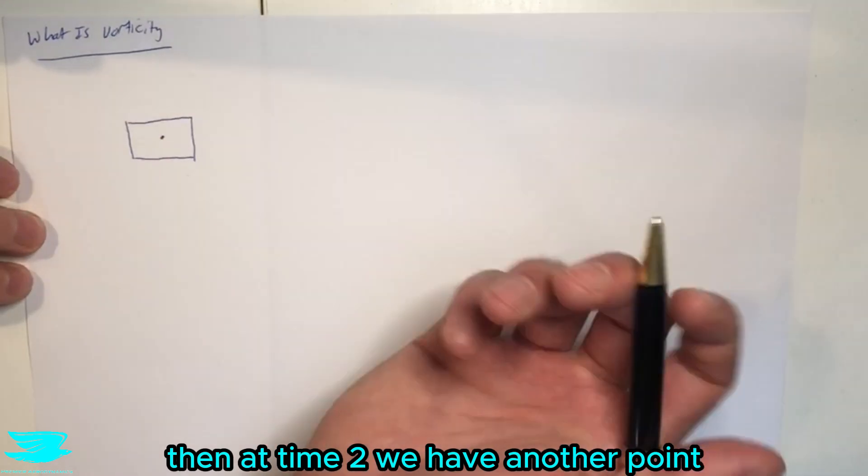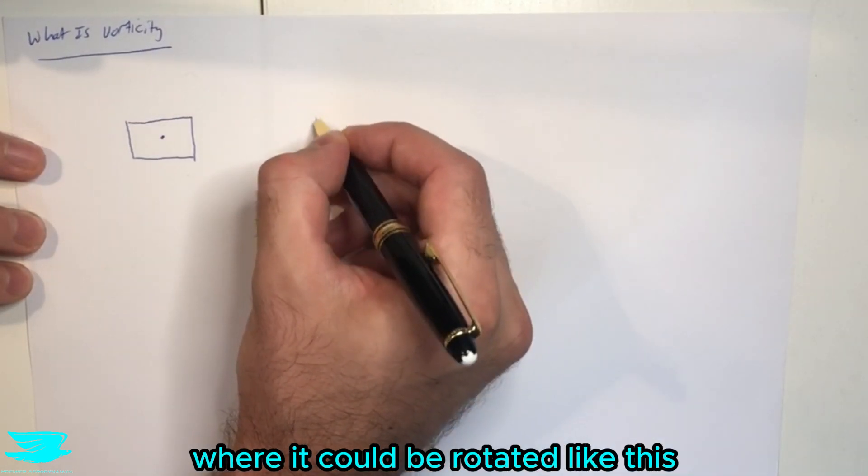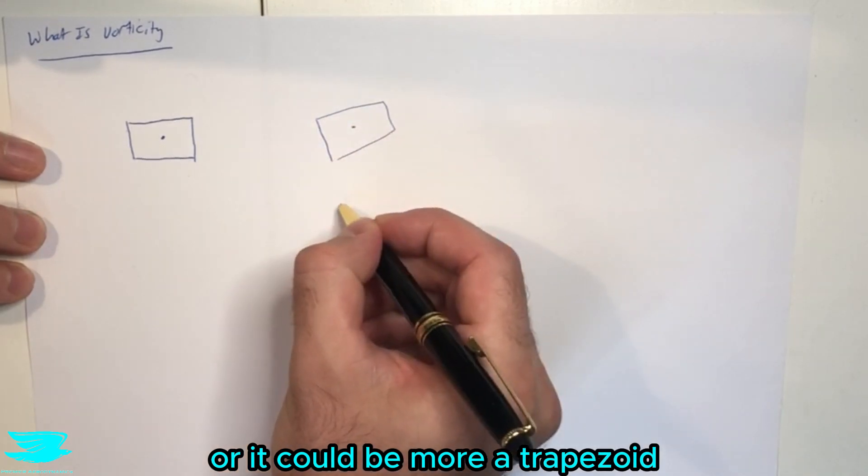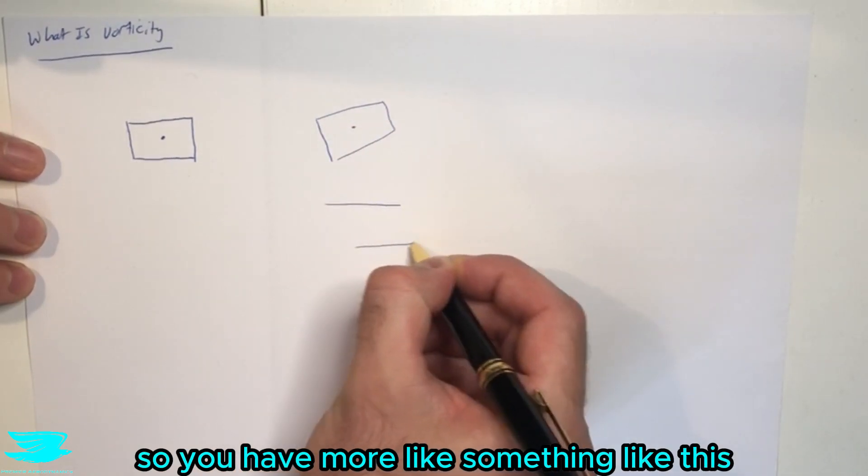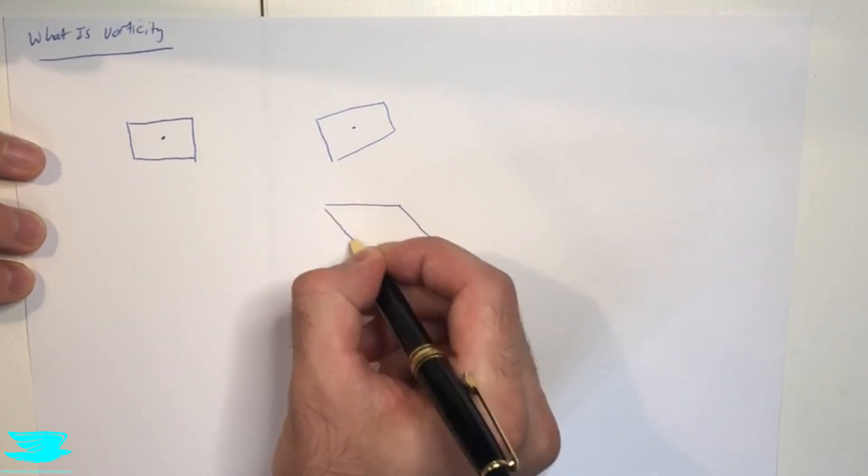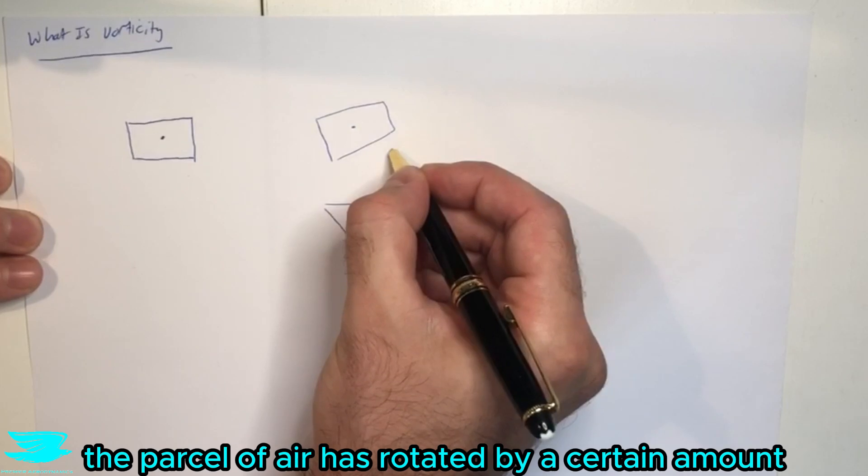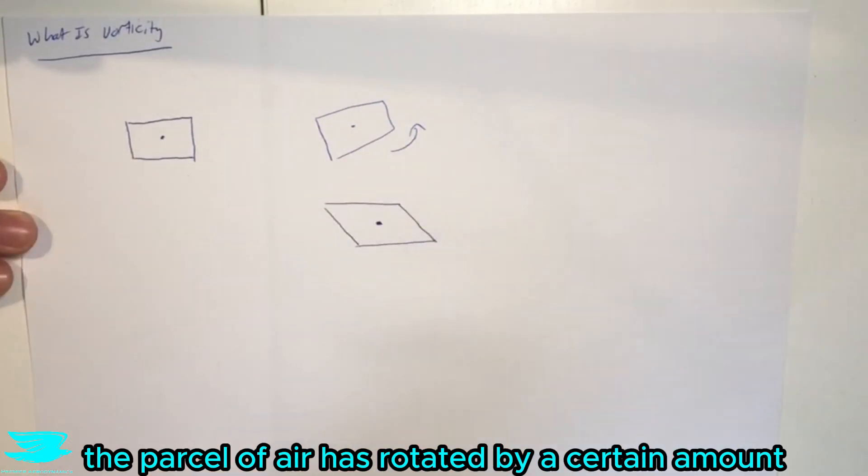Then at time two we have another point where it could be rotated like this or it could be more a trapezoid, so you have more like something like this and the dot here is the center of gravity.